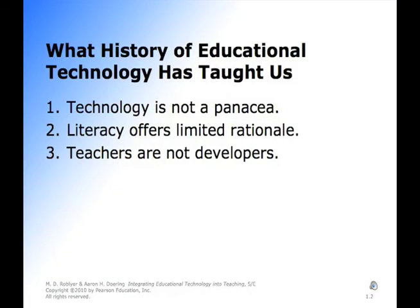Looking at Slide 2, the question is: what has the history of educational technology taught us? Bullet number one: technology is not a panacea or a quick fix. There are no quick or easy universal solutions for technology. What history has taught us is that the overuse of distance learning can create more problems than it solves. If we begin with more realistic expectations in mind, we have more practical success and impact in teaching and learning. We begin with the question: what specific needs do my students have that technology can meet? It's best not to overdo it or think technology can just fix the situation.